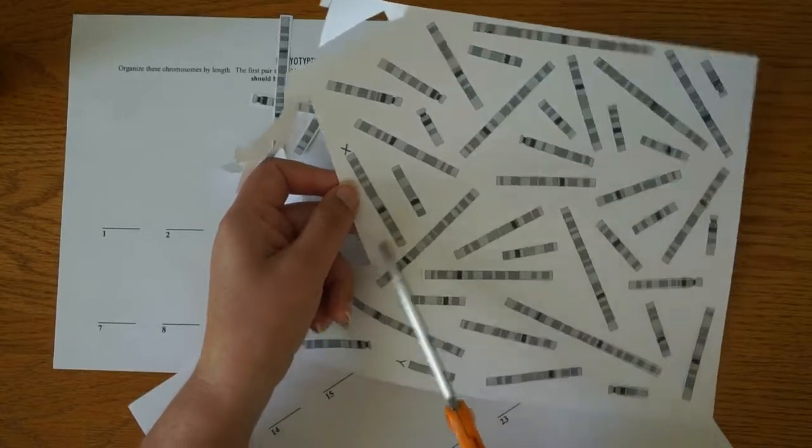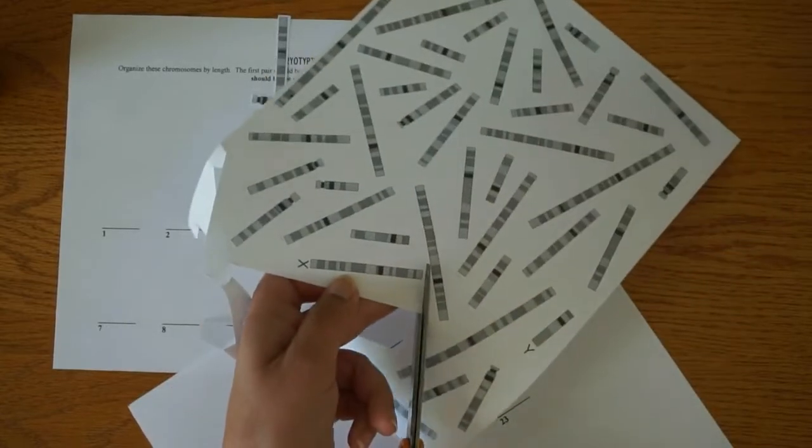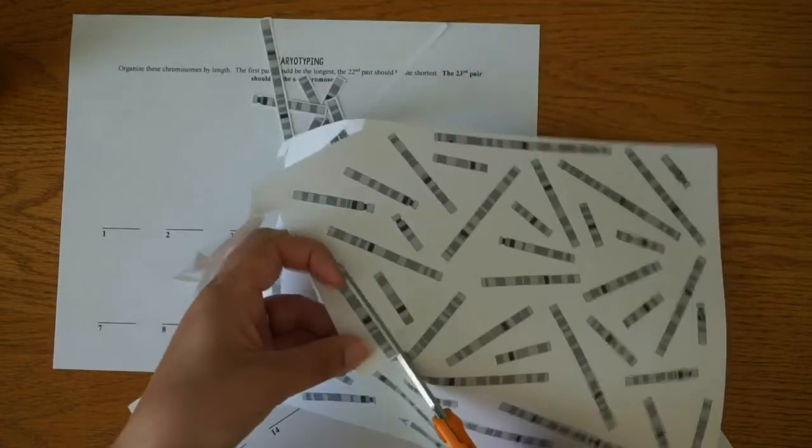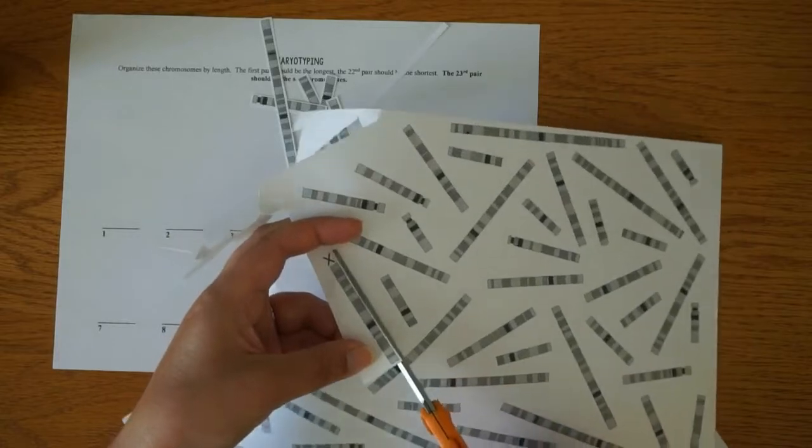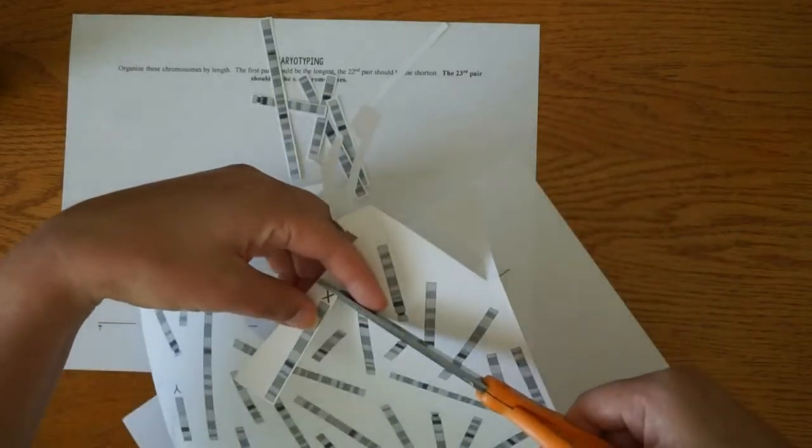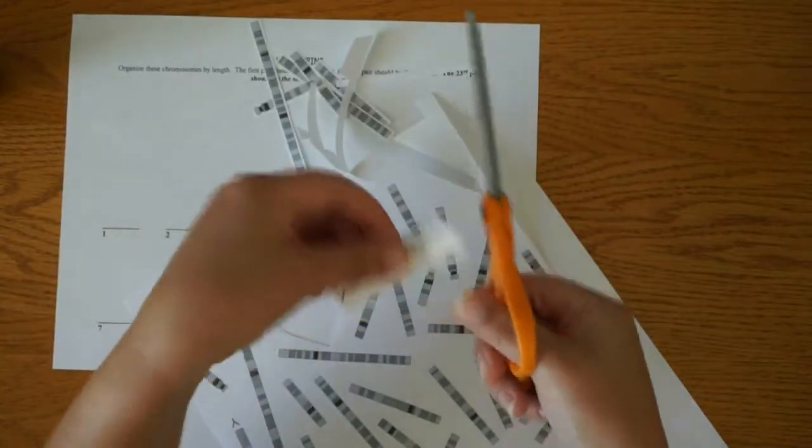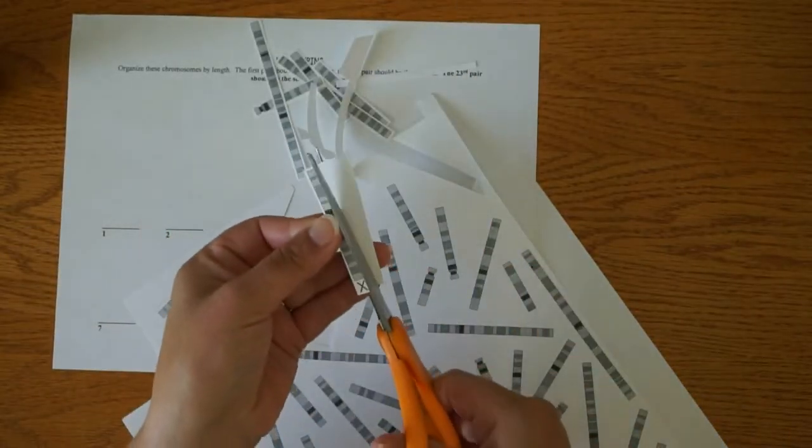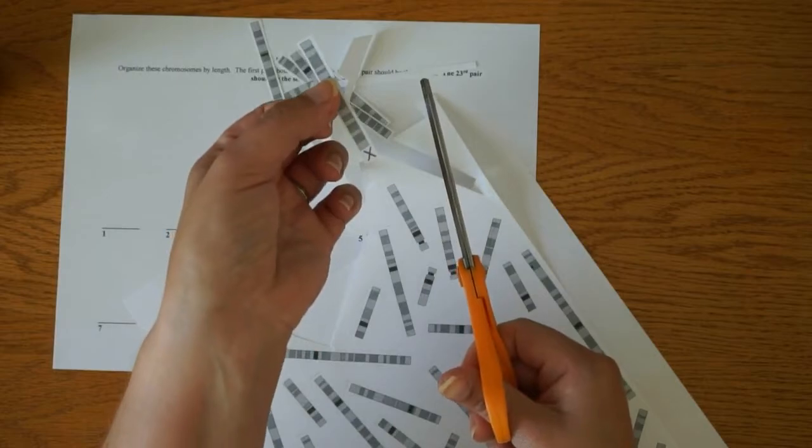When you get to the sex chromosomes, one of them has an X on it and one of them has a Y on it. You are going to want to cut out that X as well and the Y and keep it with that chromosome because that way you will be able to tell that those are different than the other chromosomes. It will keep you from getting mixed up.